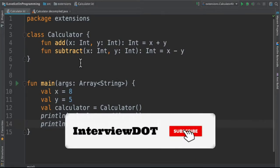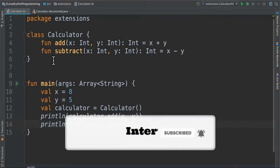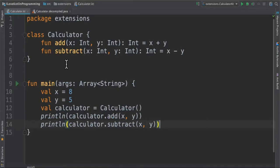Now I would like to add another functionality to the calculator class. Usually we'd be inheriting the class, but in Kotlin we can use extension functions because inheritance is for a different purpose—it's for reusing code. In Kotlin we can use extension functions safely to add more functionality.